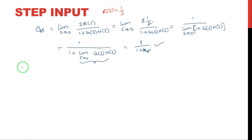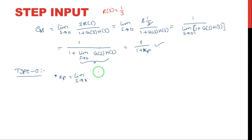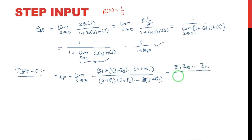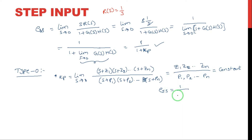Now we will move into the type of the system. For a Type 0 system, Kp = limit S→0 of [numerator (S+Z1)(S+Z2)…] / [S power 0 × denominator (S+P1)…]. Substituting S=0, the S terms vanish, leaving numerator constants Z1, Z2, etc. over denominator constants, so Kp is a finite constant. Therefore the steady state error ESS = 1/(1+Kp) is also a constant. For a Type 1 system, there is an extra 1/S, so Kp = infinity, and ESS = 1/(1+∞) = 0. For a Type 2 system, 1/S² gives Kp = infinity and ESS = 0.